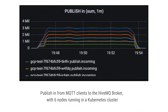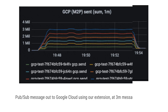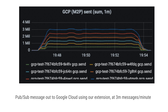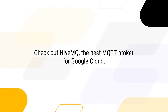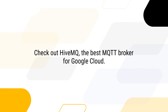Have a look at some HiveMQ data. Here you may see publishes from MQTT clients to the HiveMQ broker with six nodes running in a Kubernetes cluster. And here you can see PubSub messages out to Google Cloud using the HiveMQ extension at 3 million messages per minute. Check out HiveMQ, the best MQTT broker for Google Cloud, and integrate your MQTT device data without disrupting your GCP infrastructure. Thanks for watching and stay tuned!